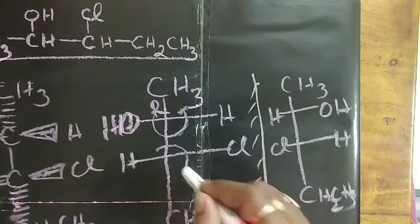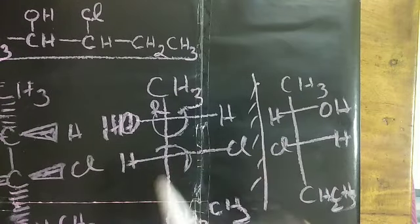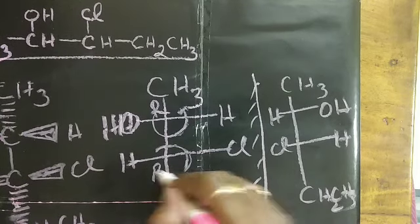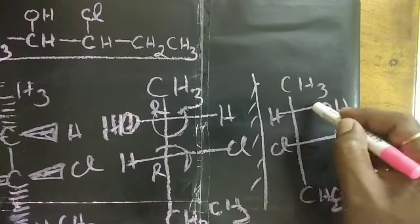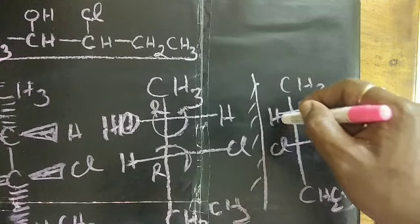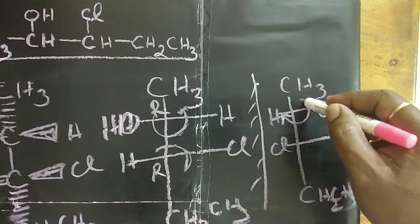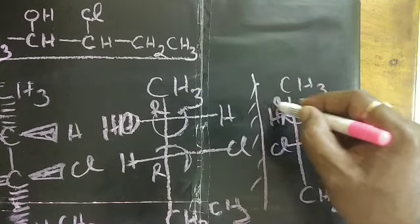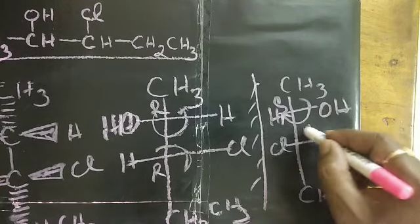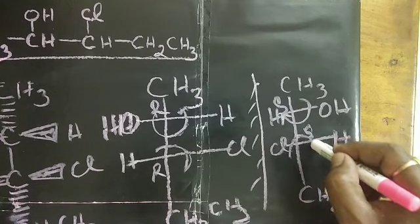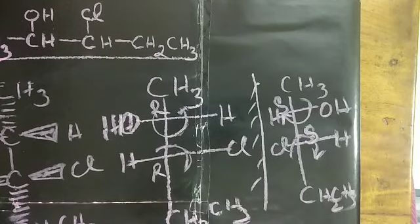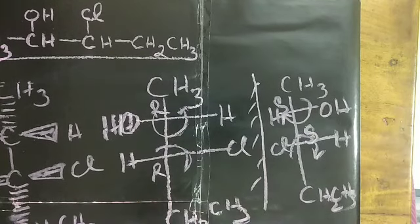And this will be OH. This is R but it will be S configuration. Let me see this. Obviously, if this is R, this will be S. Let me see this one going like this, clockwise, and it will be counterclockwise, so S configuration. So hopefully you have understood all the aspects of Fischer projection.